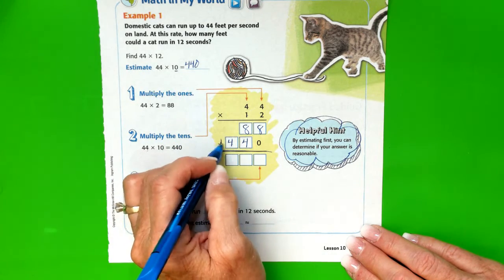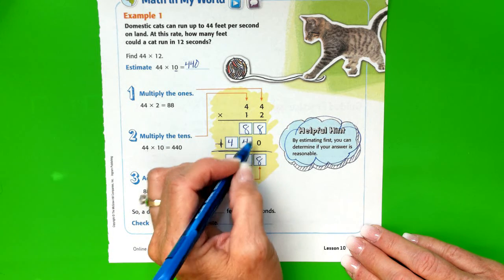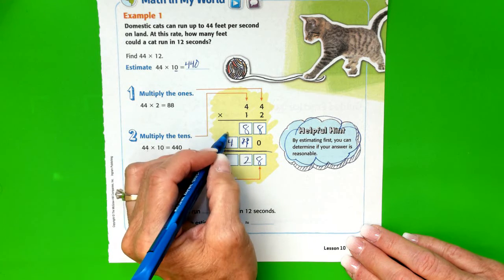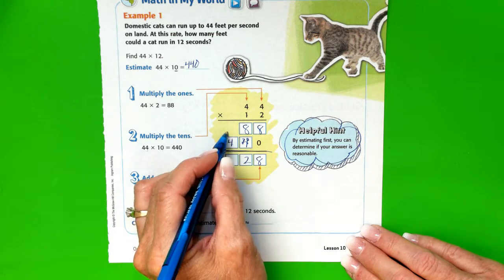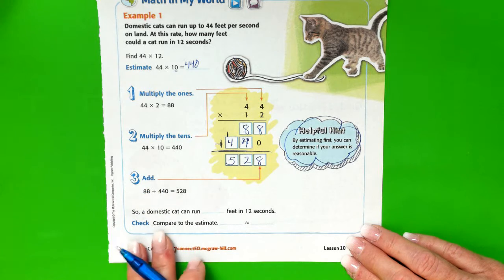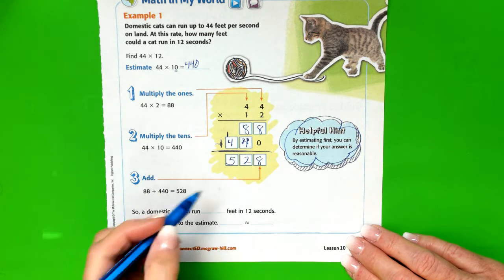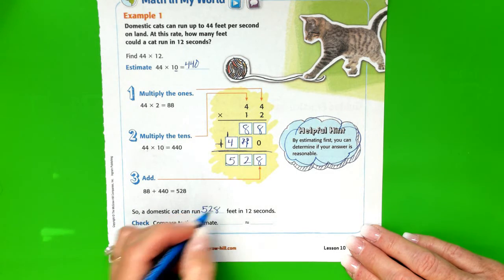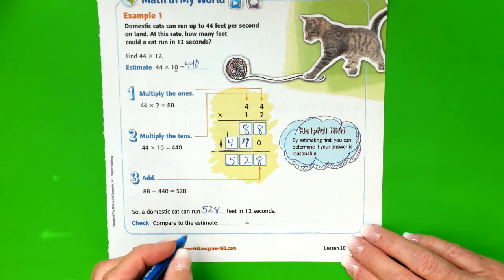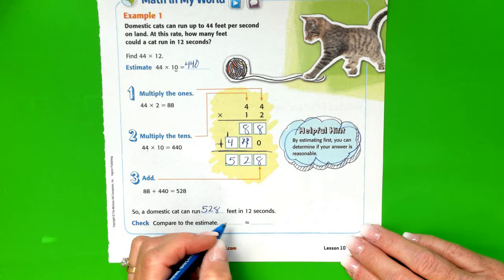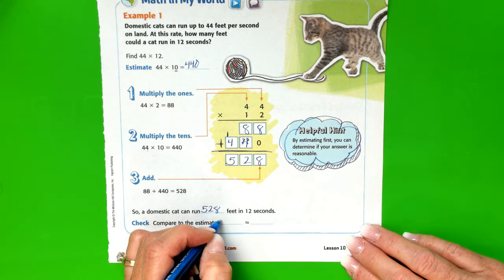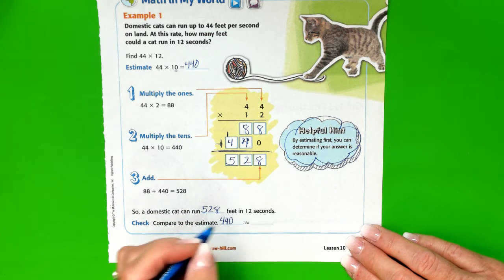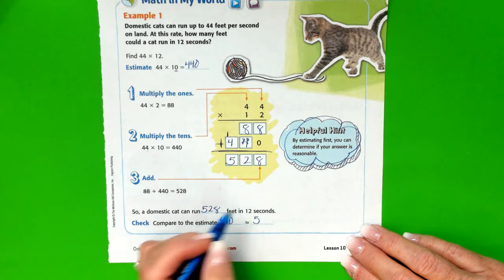we add. 8 plus 0 is 8. 8 and 4, 8, 9, 10, 11, 12. Regroup, and 4 plus 1—400s plus another—is 5. So a domestic cat can run 528 feet in 12 seconds. Our estimate of 440 is approximate to our answer of 528.